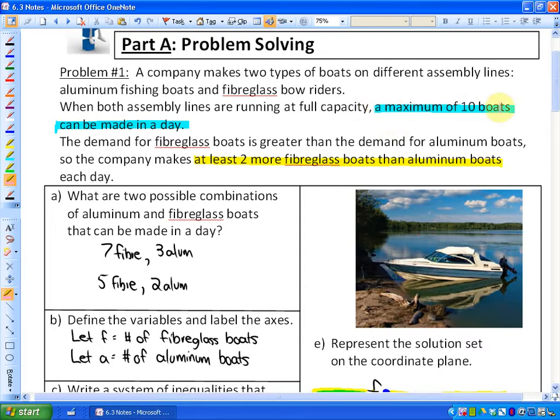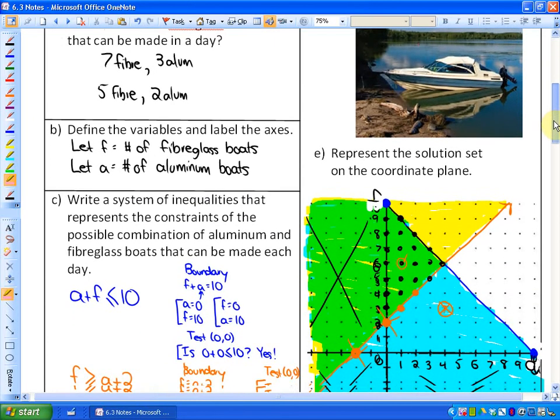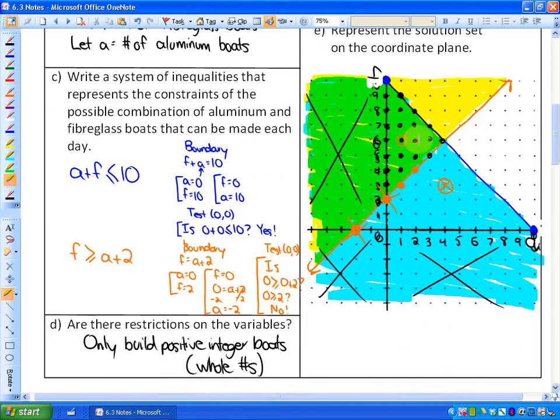So it's an example of boats where a maximum of 10 boats can be made in a day that's called a constraint, and at least two more fiberglass boats than aluminum boats, and you can look at that lesson if you'd like to. And we represented a solution region, which is this green triangle here, which is where there's a maximum of 10 boats made a day and at least two more fiberglass than aluminum boats. That's creating a model.